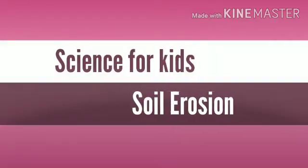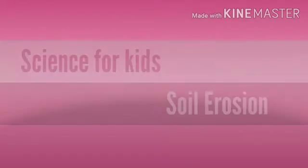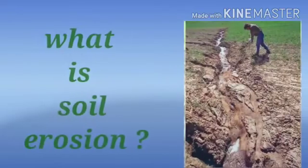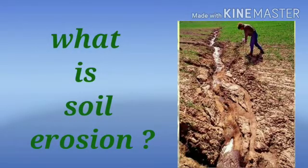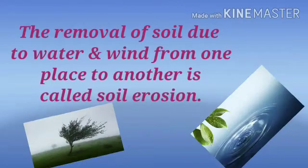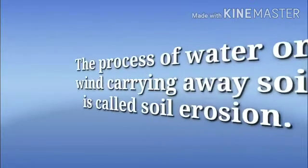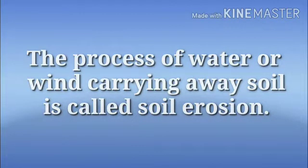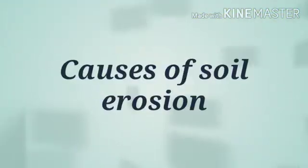Welcome to the Science for Kids series. In this series we will learn about soil erosion. What is soil erosion? The removal of soil due to water and wind from one place to another is called soil erosion. The process of water or wind carrying away soil is called soil erosion.